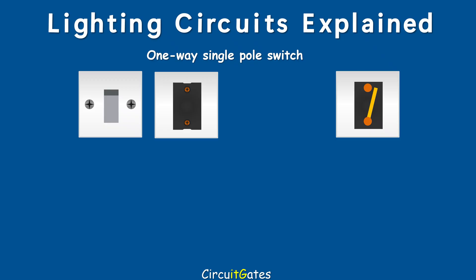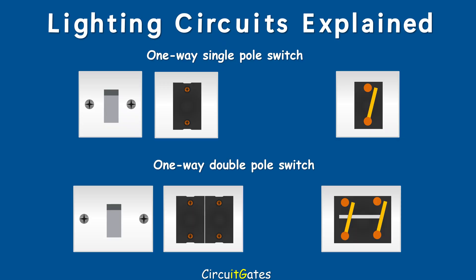The term pole is usually associated with how many electrical conductors the one-way switch, the two-way switch, and the intermediate switch control. For example, this one-way switch is a single-pole switch because when operated, only one conductor is opened or closed. Another one-way switch here is a double-pole switch because when operated, two conductors are opened or closed at the same time.